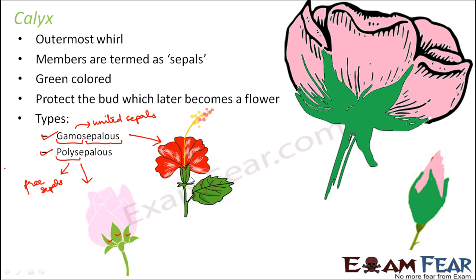Generally, the calyx is short-lived — the sepals fall off as the bud opens. They play the most important role only when the flower is in the form of a bud. Once the bud gets converted into a flower, the calyx does not have a major role to play, so most of the time they actually fall off and do not live for a very long time.